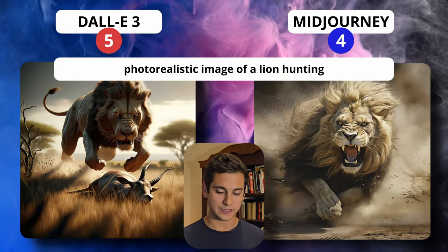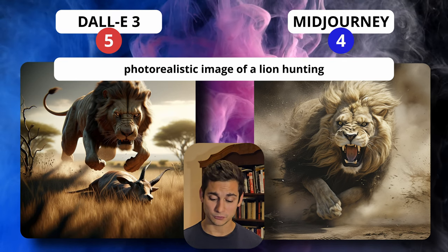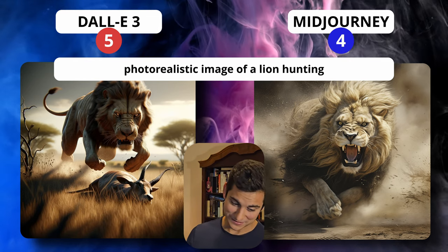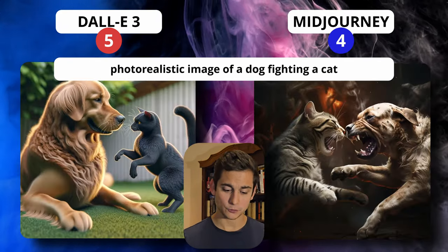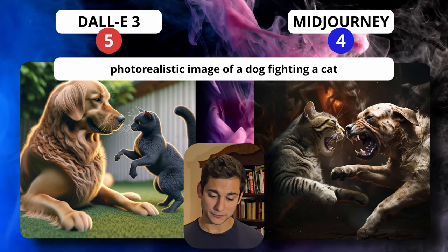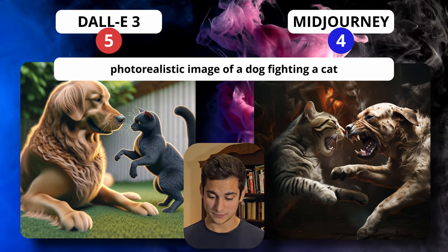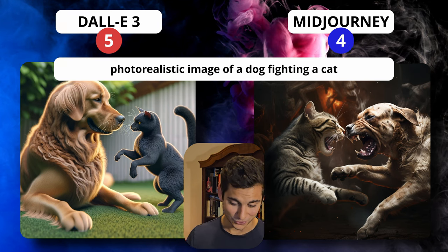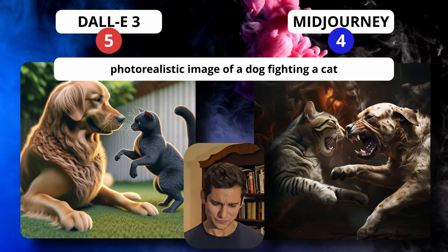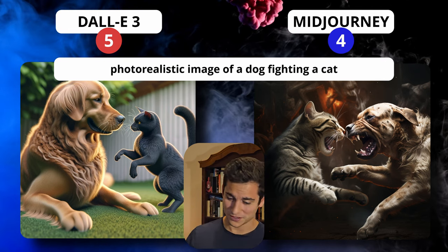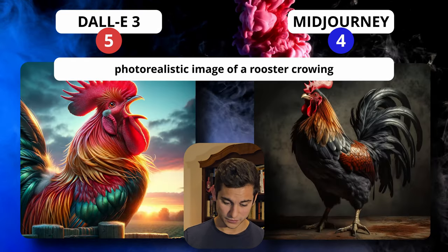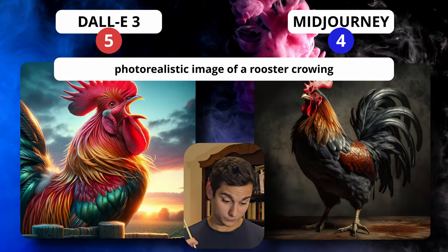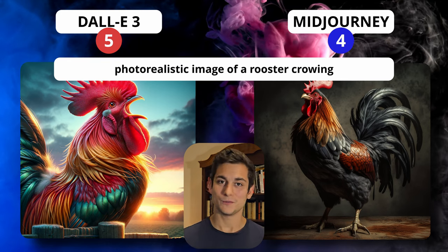Round five — animals. A photorealistic image of a lion hunting: Midjourney looks straight out of Animal Planet or National Geographic, very compelling. DALL-E 3 again has those 2002 video game vibes. Then a photorealistic image of a dog fighting a cat: excluding the background, Midjourney's dog and cat fighting is fantastic, whereas DALL-E 3 has Sims pet party vibes and I'm not even sure if those animals are fighting. The last image is a photorealistic image of a rooster crowing: DALL-E 3's rooster is crowing, Midjourney's isn't — Midjourney is ignoring me again. However the image is much better on Midjourney so I'm giving a point to Midjourney for this round.